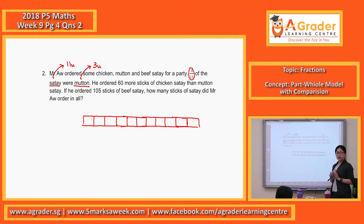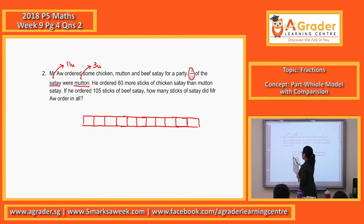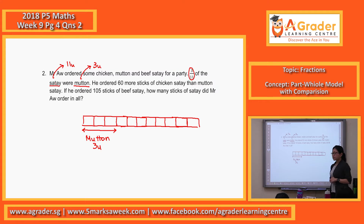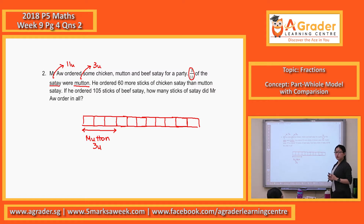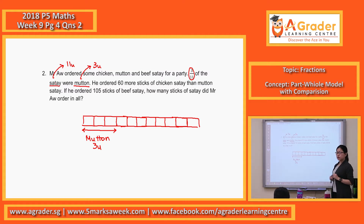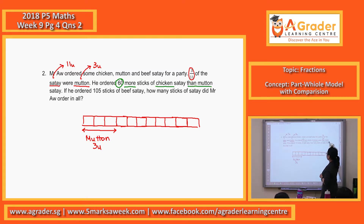If you're done with the 11, then you'll take 3 units for the mutton. The thing that is different from this question compared to the example is because of the next line. Mutton satay is 3 units.